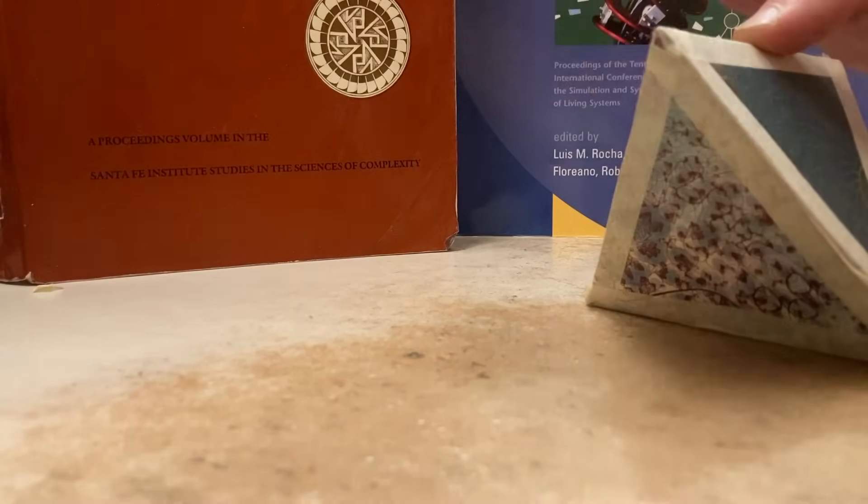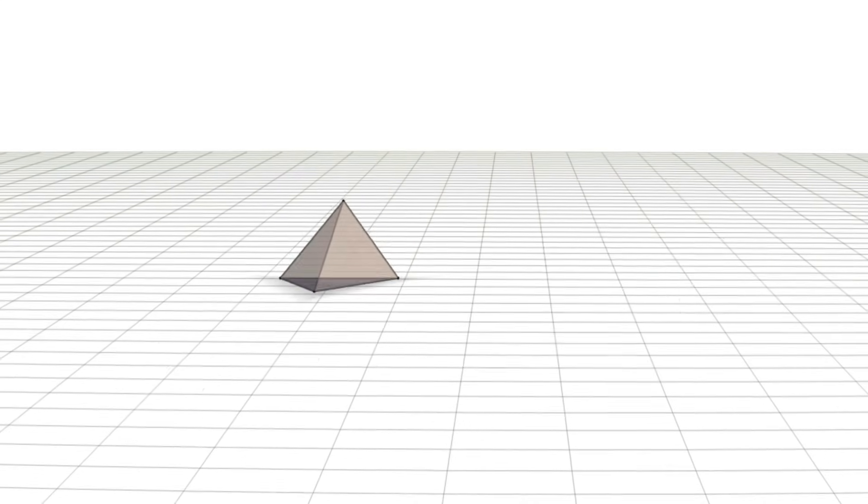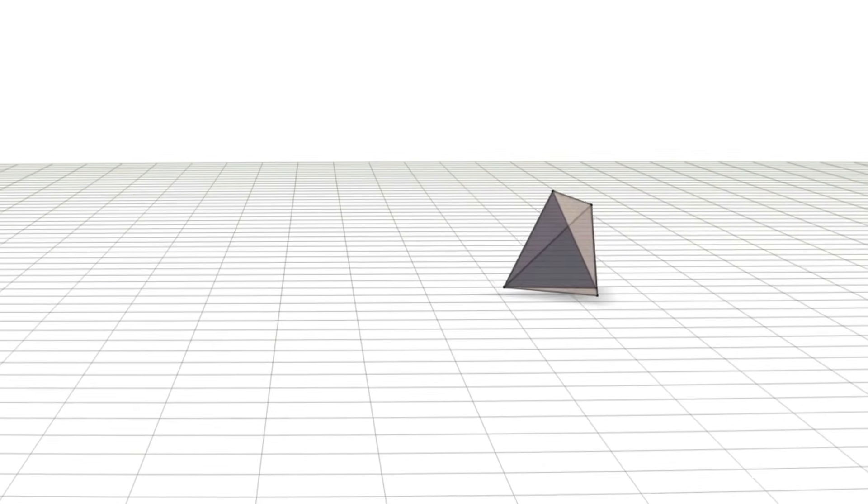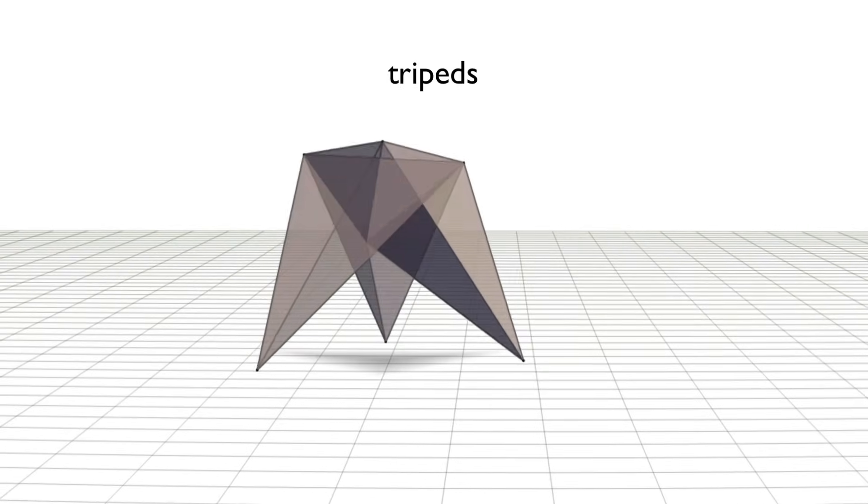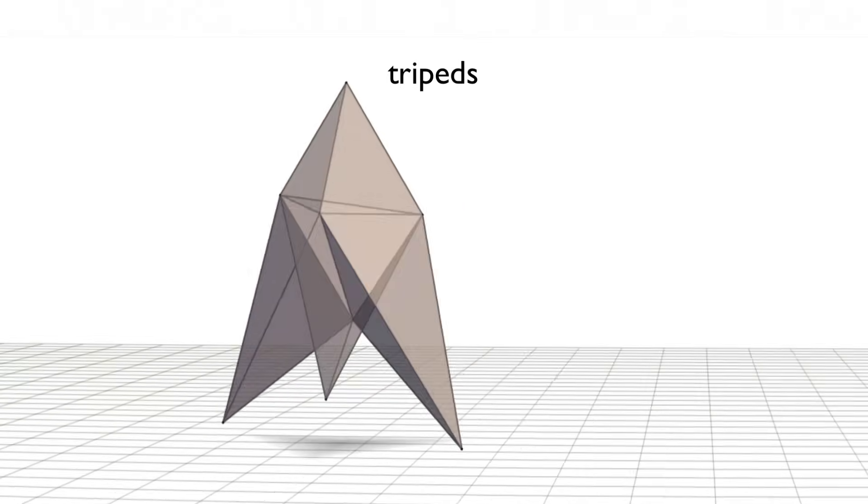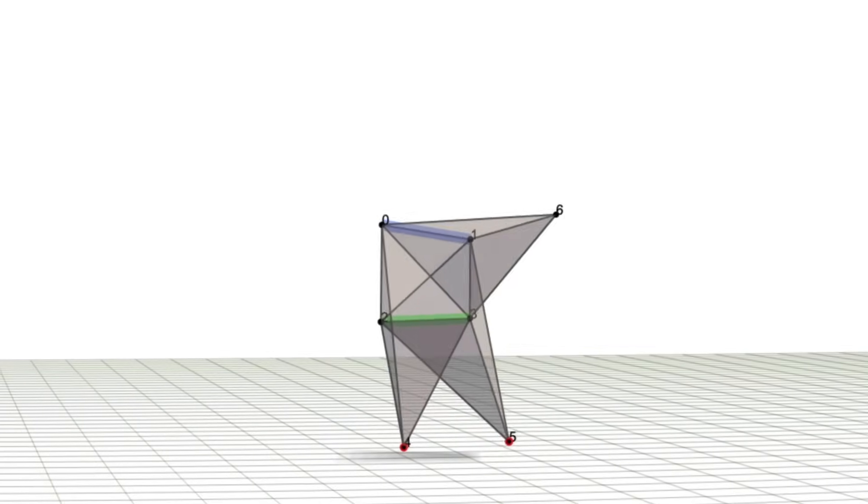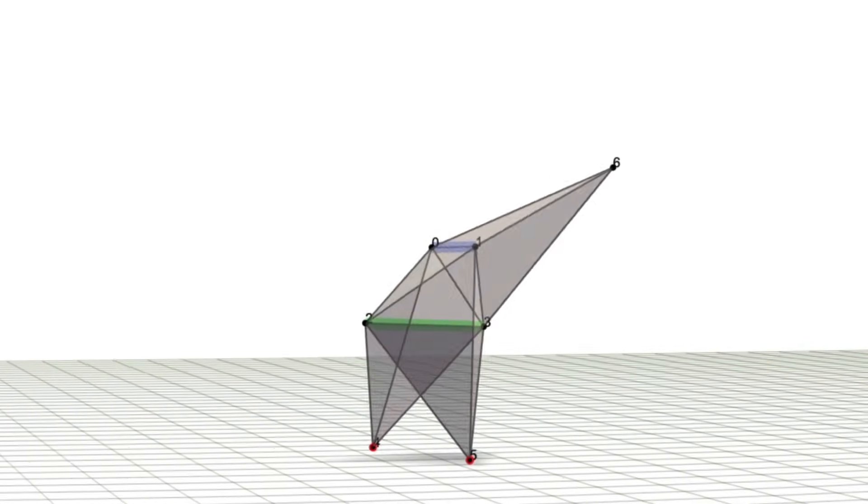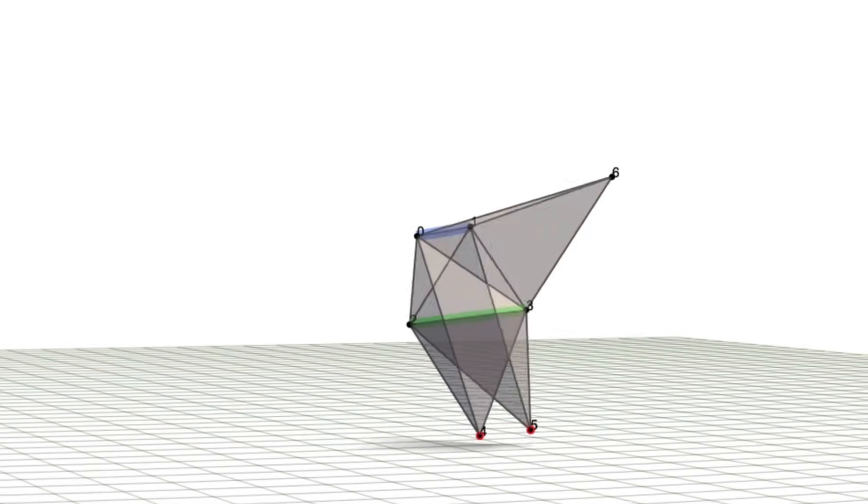Since walking on two feet is a tricky balancing act, I began my experiments with something simpler, tripedal locomotion, walking on three feet. Here are some examples of evolved tripeds. Once I got that working, I could then move on to vestibular walking.